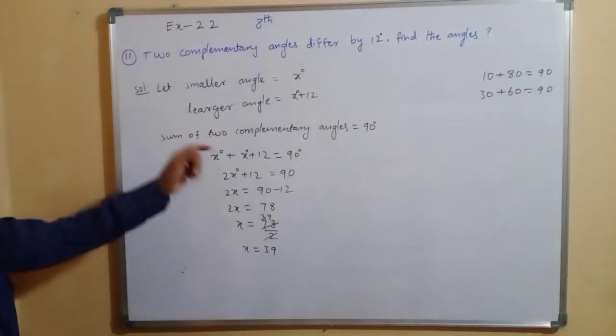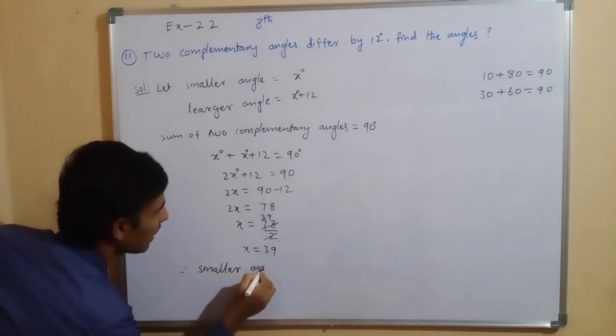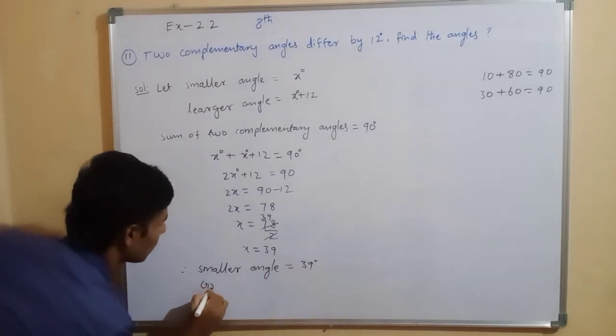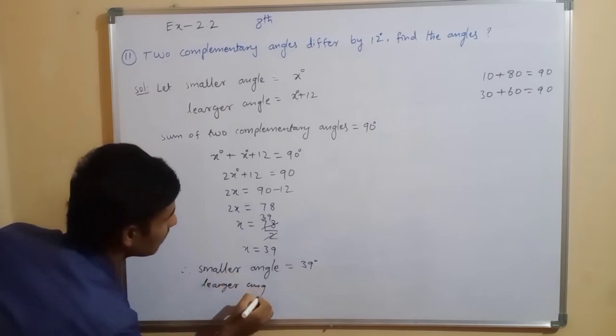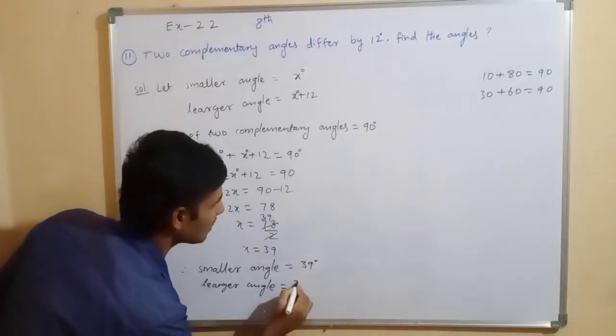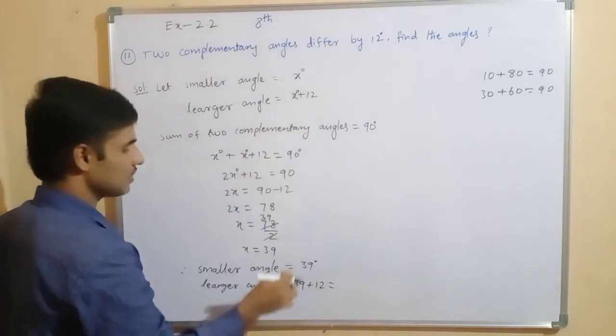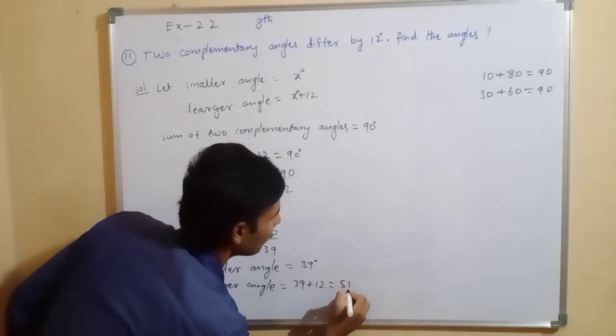Therefore, we have to write, smaller angle equal to 39 degrees. Next, here, which one, larger we take, so, larger angle equal to, see, x plus, x means what here, 39. 39 plus 12, so, 39 plus 12, how much here? 51 degrees.